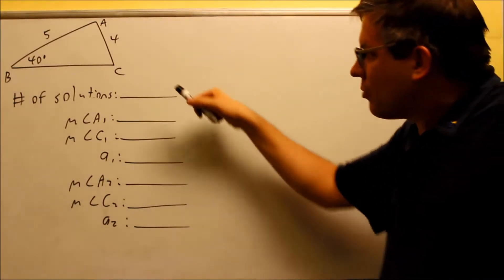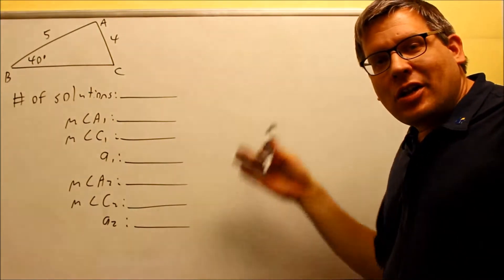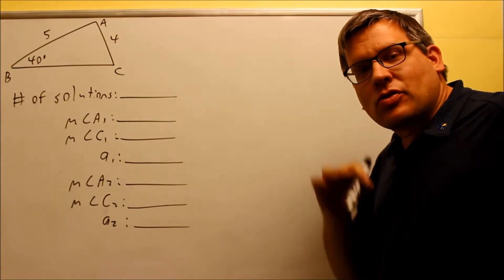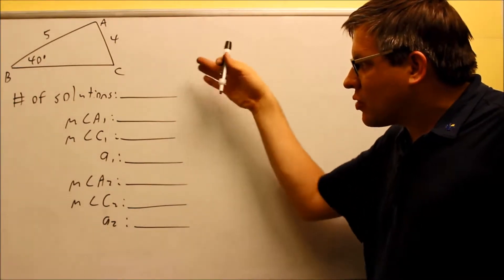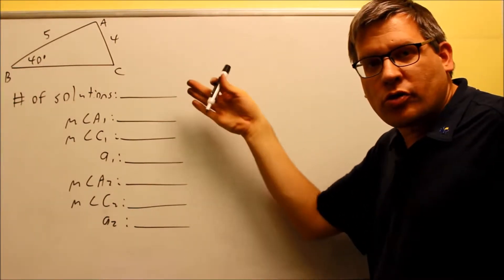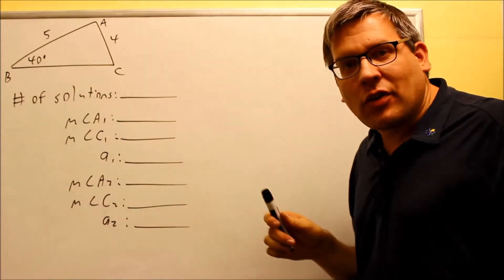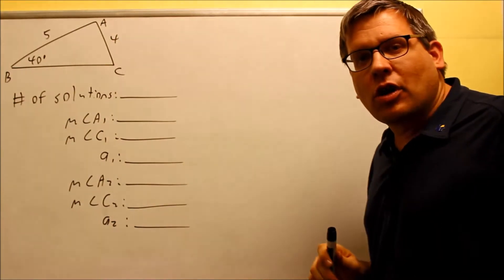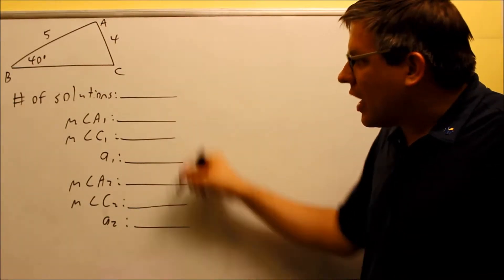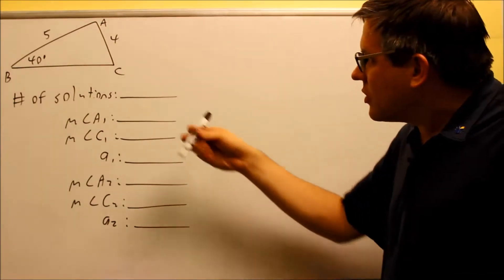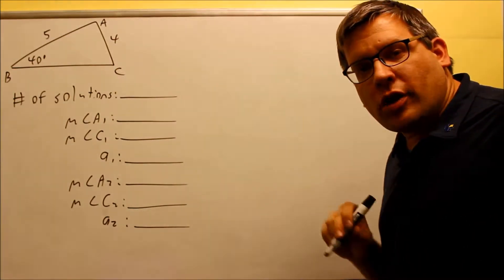Here we have another problem where we want to find the number of solutions. We have side-side angle. By the way, if the problem has two given angles, you don't have to actually do this process. The only time we have to worry about having one or two solutions is if you're taking an inverse sine. If you have two out of the three angles given, you already know what the third one is. This process really only applies for the side-side angle situation when you only have one angle provided.